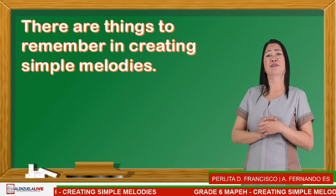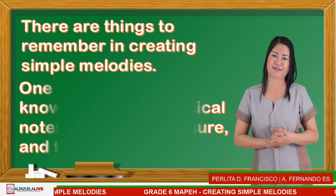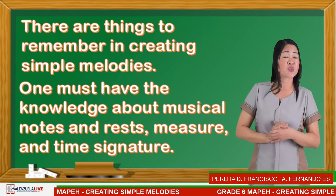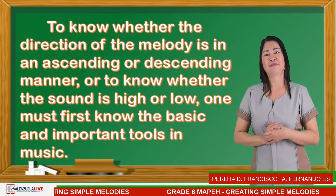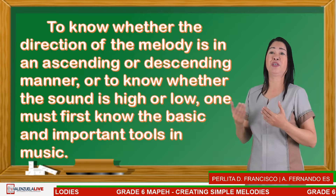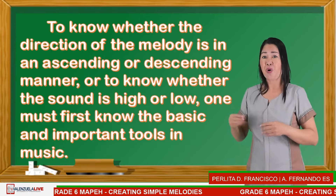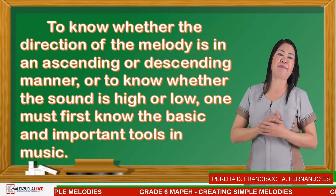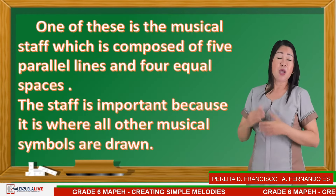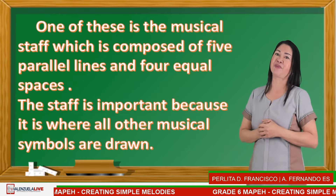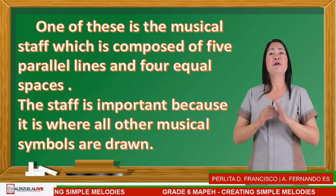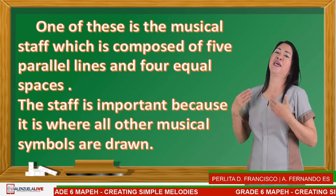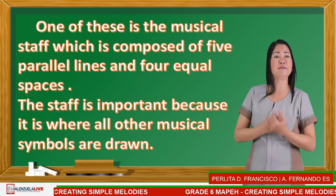There are things to remember in creating simple melodies. First, one must have knowledge about musical notes and rests, measure and time signature. To know whether the direction of the melody is ascending or descending, one must know the basic tools in music. One of these is the musical staff, which is composed of five parallel lines and four equal spaces. The staff is important because it is where all other musical symbols are written.